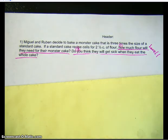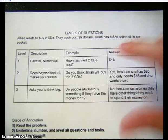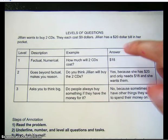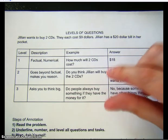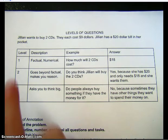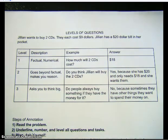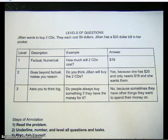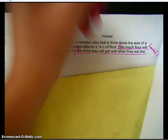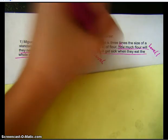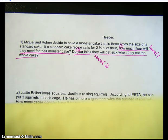Now, question two — 'do you think they will get sick when they eat the whole cake?' — that's definitely not a level one, because the answer isn't a factual number. It's going to be probably either a two or a three. Level two makes you reason — you need some information from the problem to know if they're going to get sick. Level three asks you to think big, like 'why do people make lots of cake?' — things you don't need the problem to necessarily answer. So question two is actually a level two question.